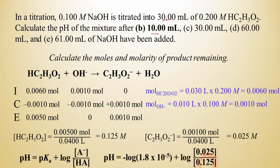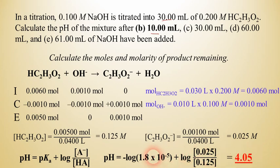Plugging into Henderson-Hasselbalch: pH = -log(1.8 × 10⁻⁵) + log(0.025/0.125), giving a value of about 4.05. So the pH after 10 milliliters is approximately 4.05. If you don't like the Henderson-Hasselbalch equation, you can actually set this up as a second ICE box using molarity, but most students find that equation is a nice shortcut.